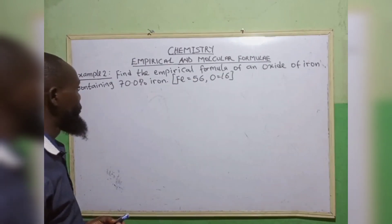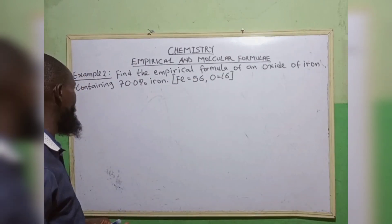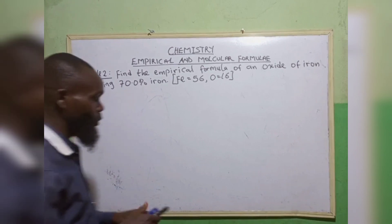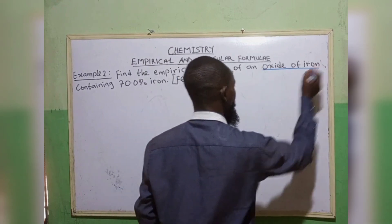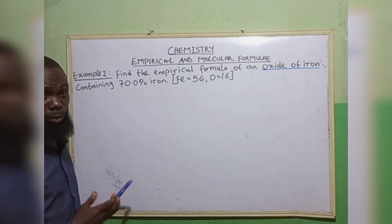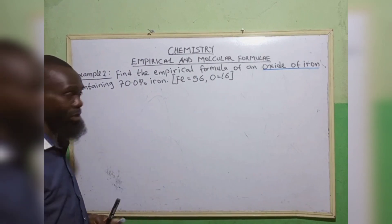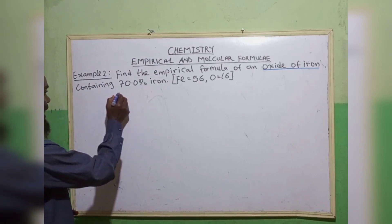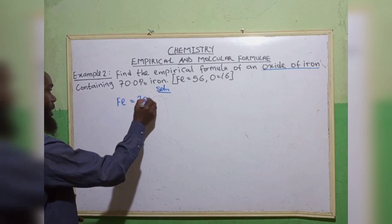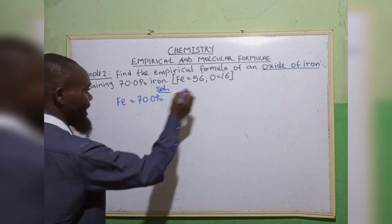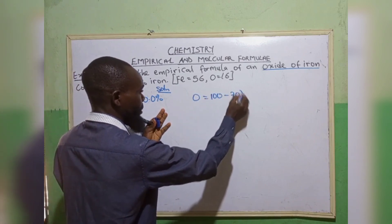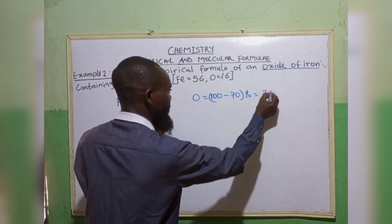Example 2: find the empirical formula of an oxide of iron containing 70.0% iron. Note the word 'oxide of iron,' meaning it contains oxygen and iron. The positive one will come first — that is, iron and oxygen. So iron Fe equals 70.0%, and oxygen will be 100 minus 70%, which gives 30%.